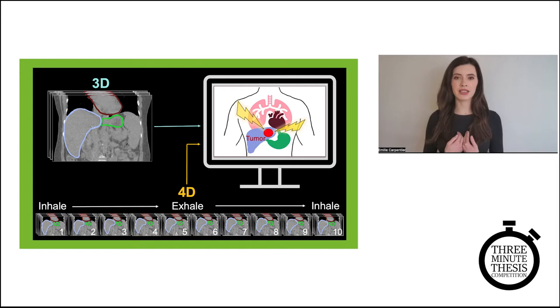About half these patients will have radiation therapy, where a large machine aims beams of radiation into the patient's body to kill the tumor while avoiding the organs nearby. So if the patient's liver is moving while they breathe, how can we safely treat them with radiation?